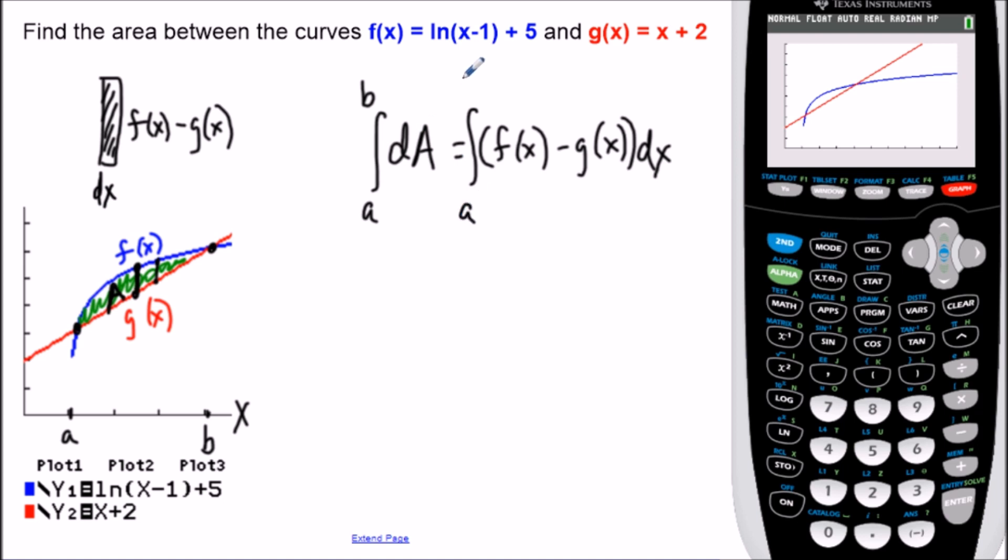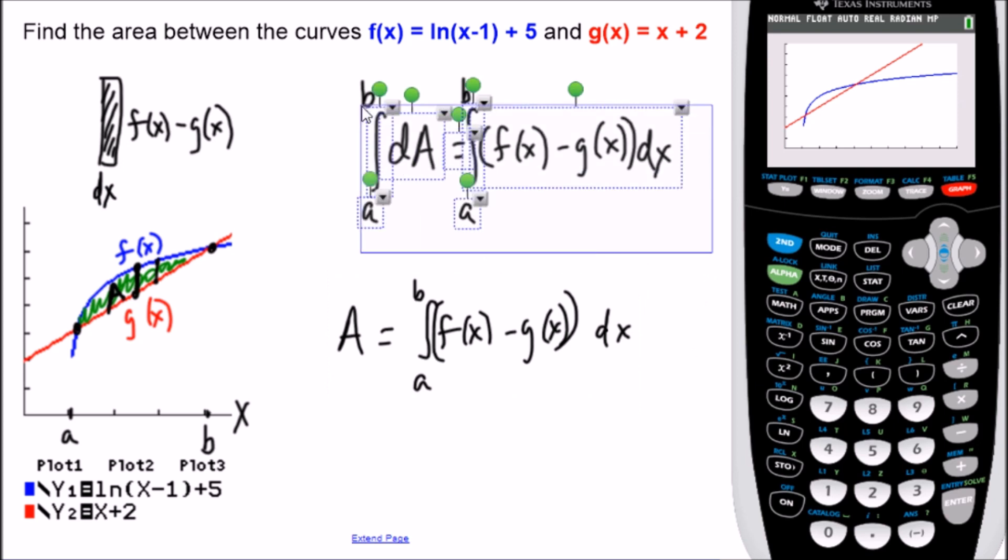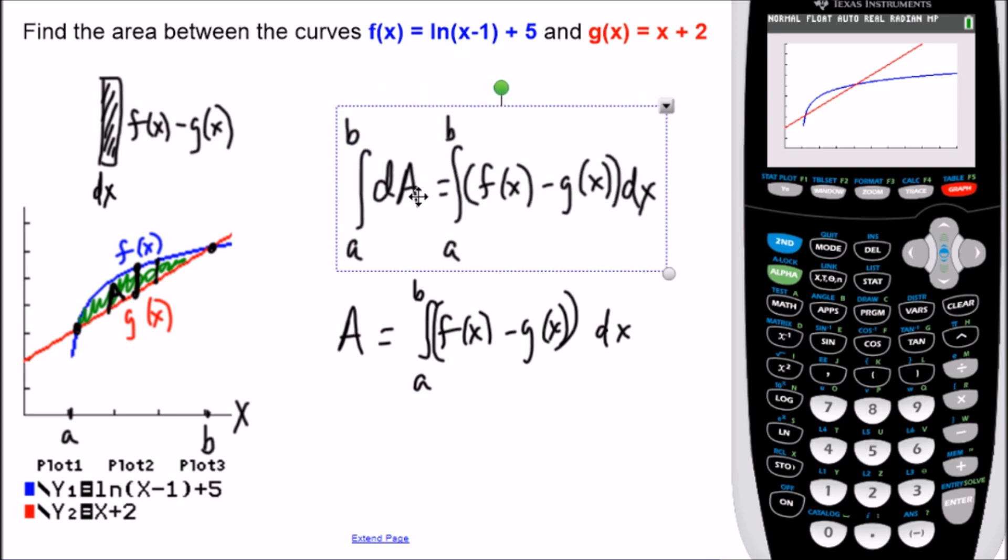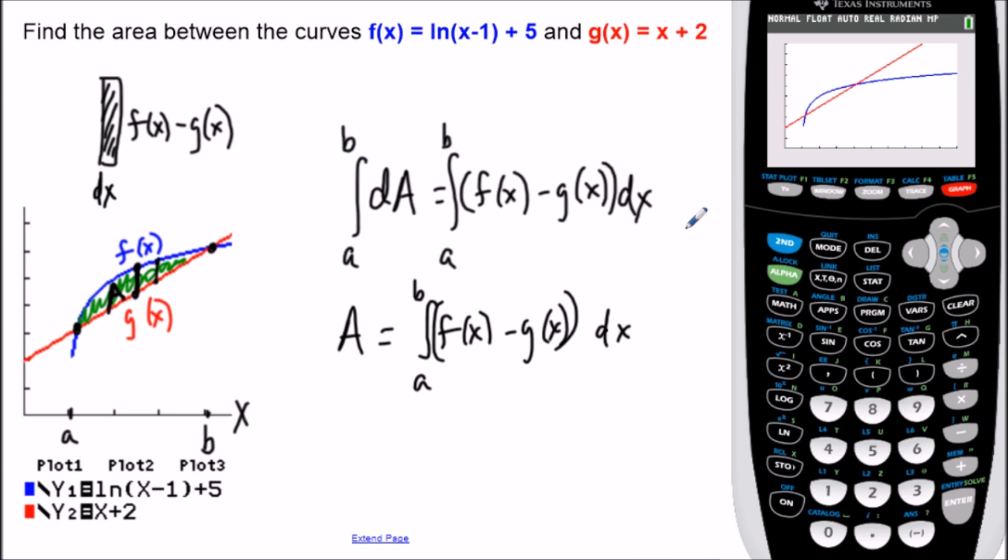So we write that on both sides. And on the left side, that's just going to give us the area A is equal to the integral from a to b of f of x minus g of x dx. And we'll just throw an extra set of parentheses here. So now the technology part. Now that we have everything set up, what we absolutely need to know here is the value for a and the value for b.